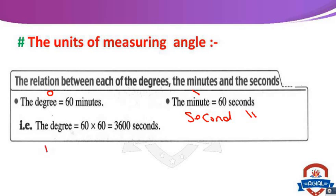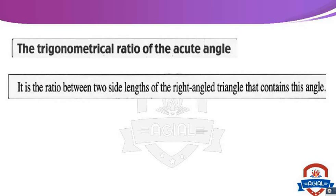One degree equals 60 minutes, and one minute equals 60 seconds. Now, the trigonometrical ratios of the acute angle. What is the meaning of trigonometrical ratios of the acute angle? It is the ratio between two side lengths of the right-angled triangle that contains this angle.